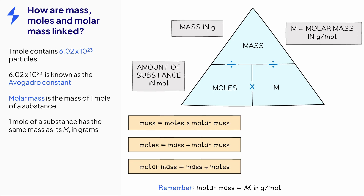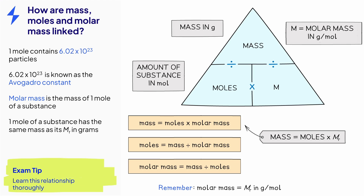You should recall that one mole of a substance has the same mass as its relative formula mass written in grams, which means that the molar mass of a substance can be calculated by finding the relative formula mass of the substance in question. This means that the relationships shown in these equations are often written using relative formula mass instead of molar mass. For example, the first equation can be written as mass equals moles multiplied by the relative formula mass. Either way of writing these equations in an exam is accepted. It is really important that you learn this relationship thoroughly as you are not given the equations in exams.